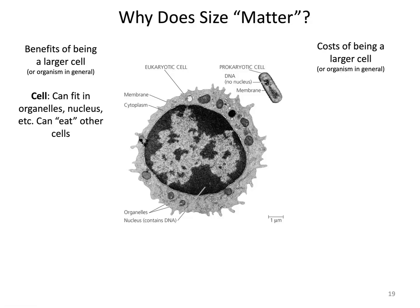One big benefit of a larger cell is it can fit organelles, a nucleus, and different types of organelles that allow it to process nutrients and organize cellular processes in a more efficient and compartmentalized way. Being a larger cell also means some cells can eat other cells through phagocytosis — they act like a giant blob and engulf smaller cells, getting better nutrients by eating other cellular organisms.